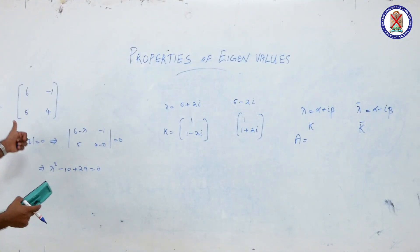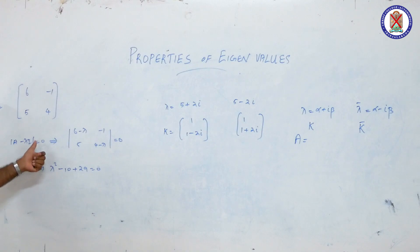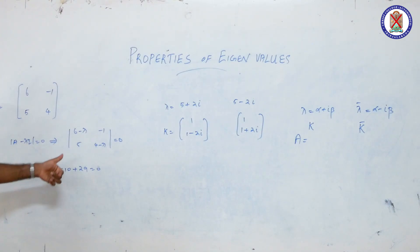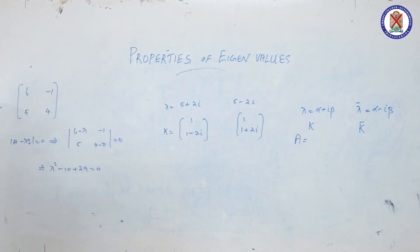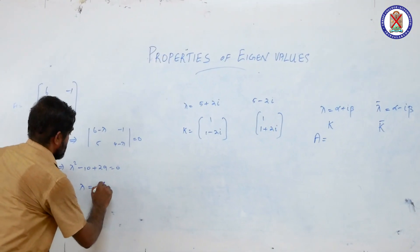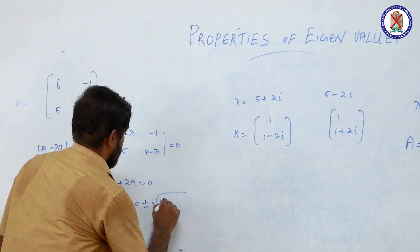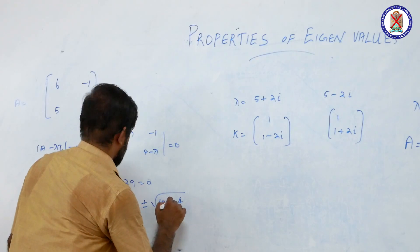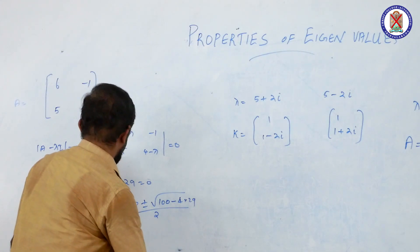As an example, consider this 2×2 square matrix. To find the eigenvalues, consider the characteristic equation: determinant of (A minus lambda I) equals 0. By expanding this equation, we get lambda squared minus 10*lambda plus 29 equals 0. Applying the quadratic formula, we get lambda equals (10 ± √(100 − 4×29)) / 2.